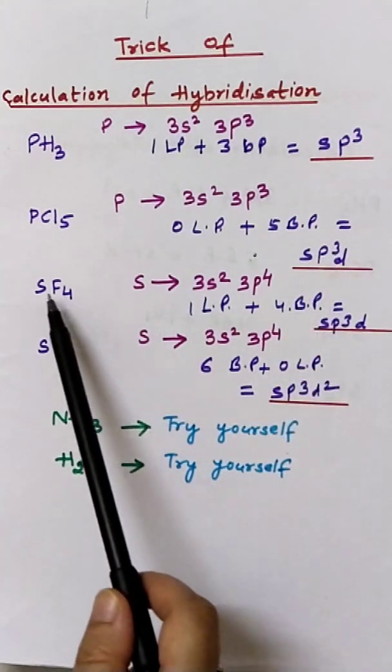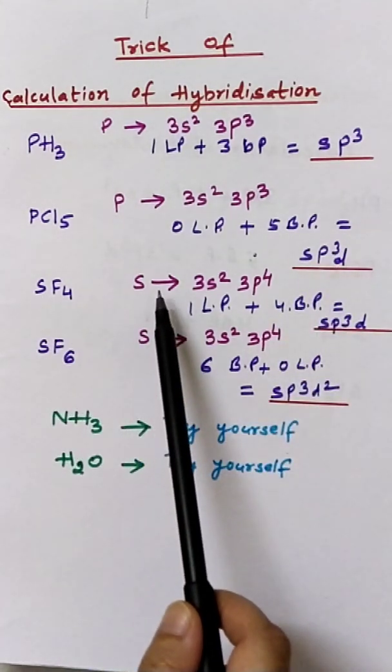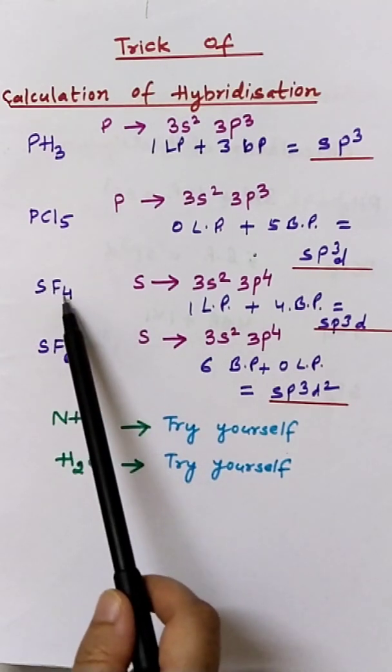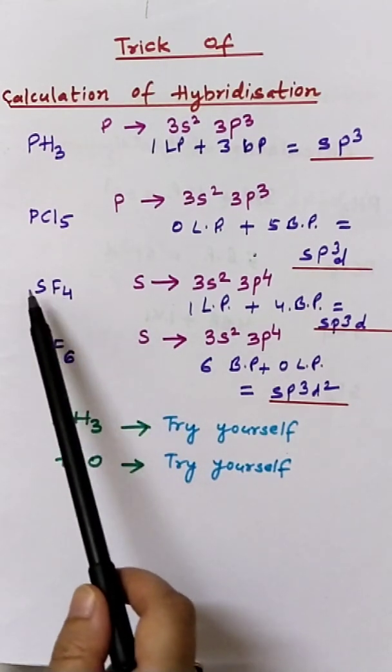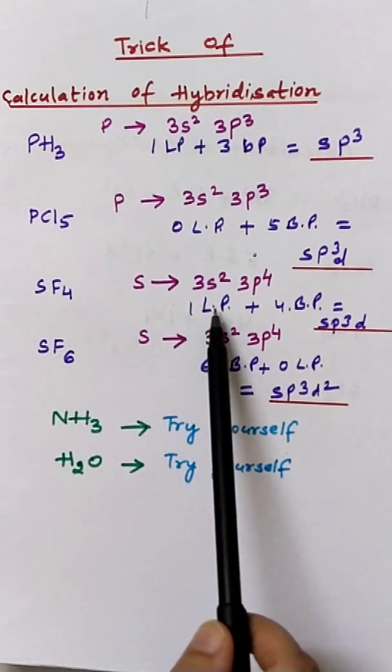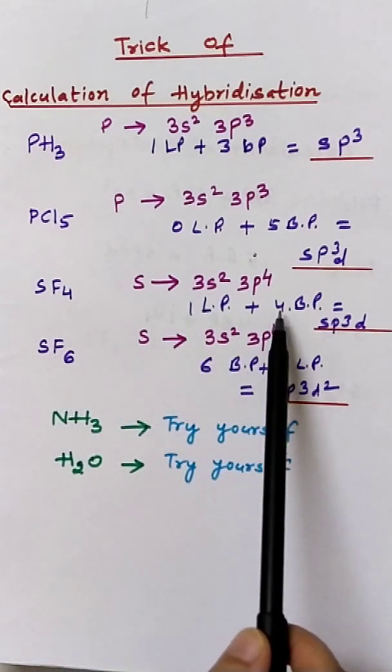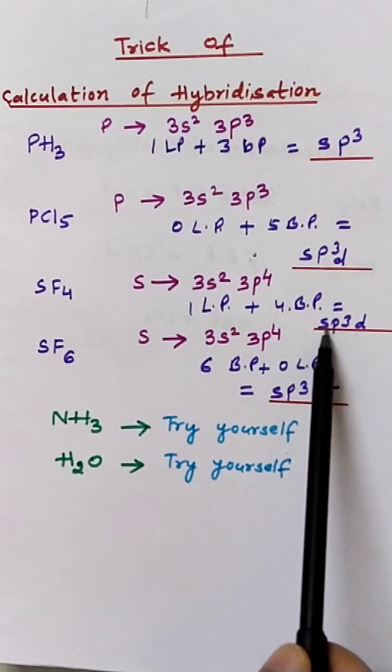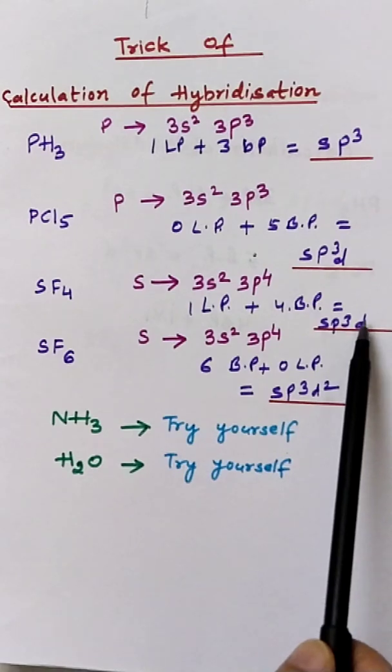In SF4, sulfur has 6 valence electrons. 4 valence electrons will form 4 bond pairs with 4 fluorine atoms and 1 lone pair will be left. So total is 5. The hybridization is sp3d: 1 plus 3 equals 4, plus 1 equals 5.